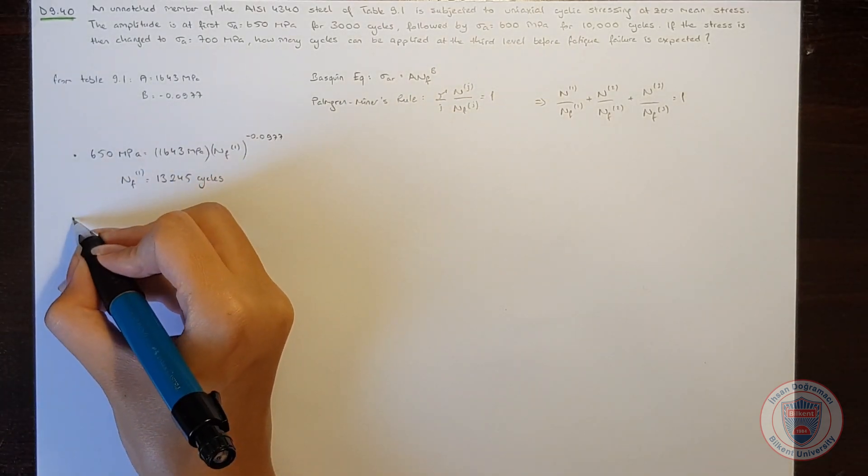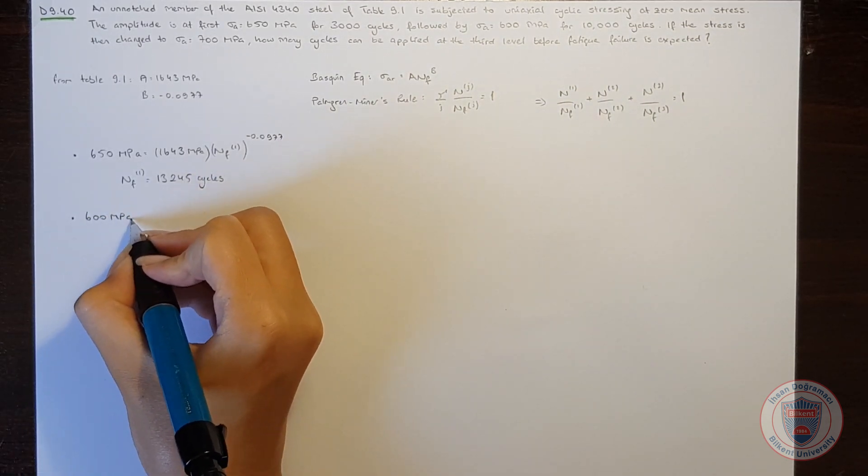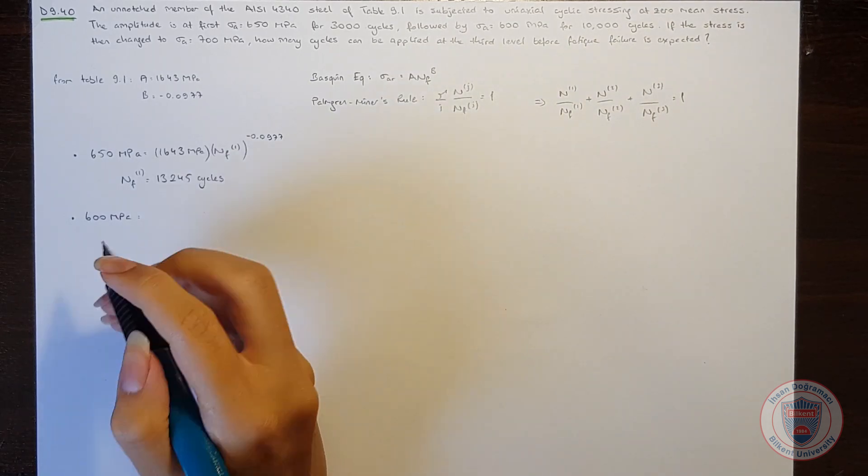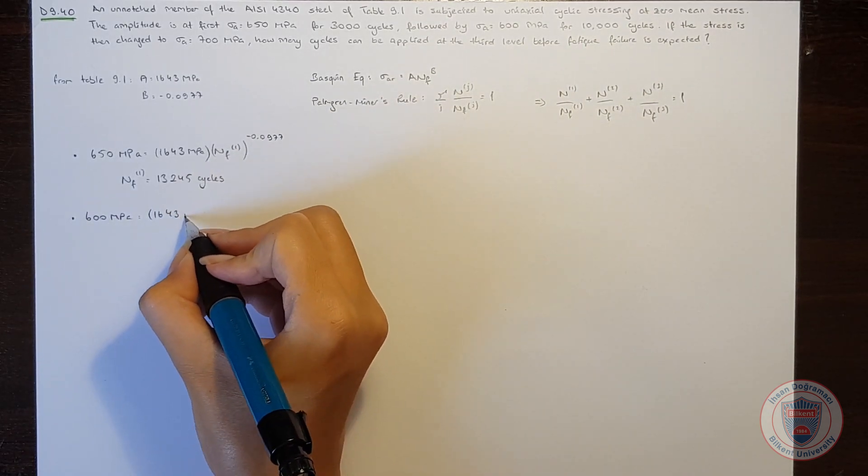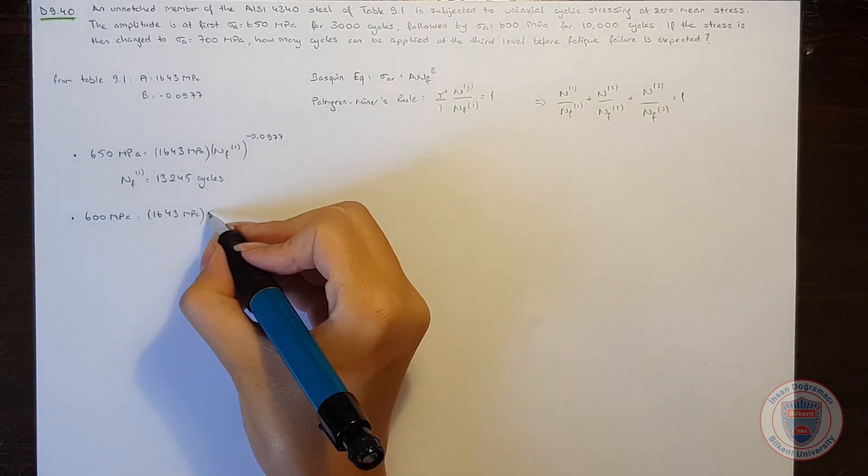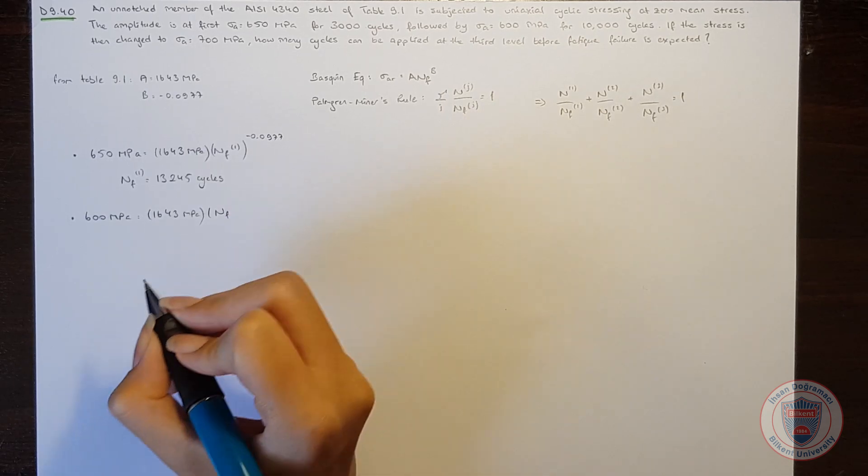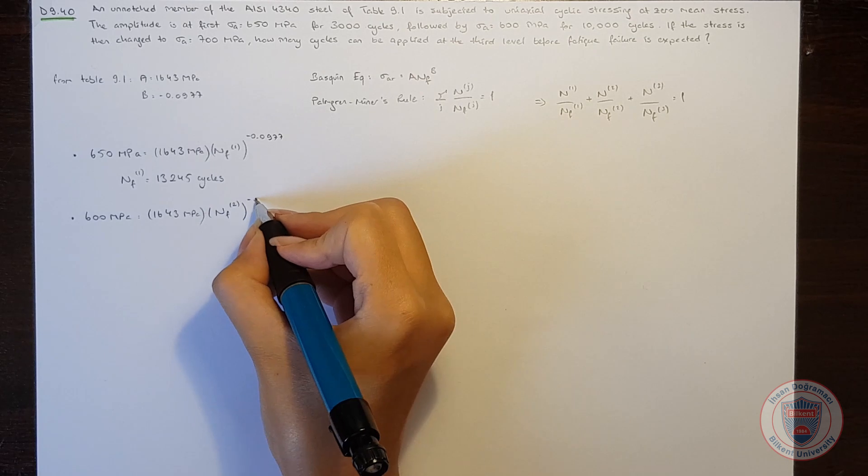When we move to the second level, we will see that 600 MPa, which is the stress amplitude, will be equal to again 1643 times the total number of cycles at the second level to the power of minus 0.0977.